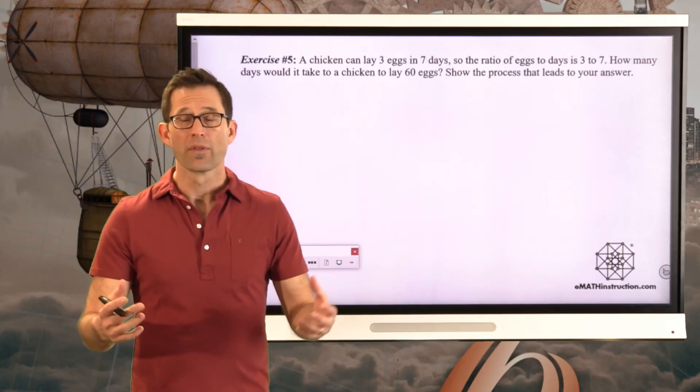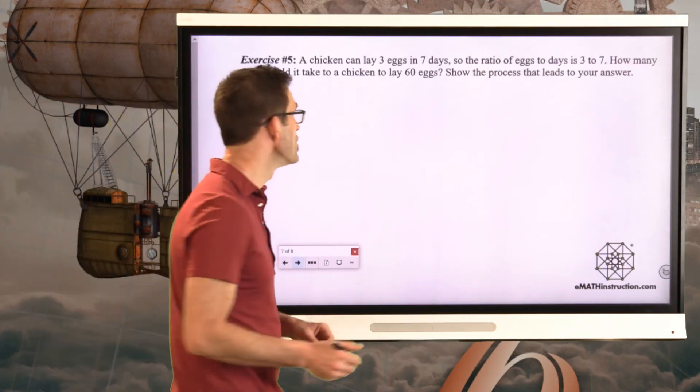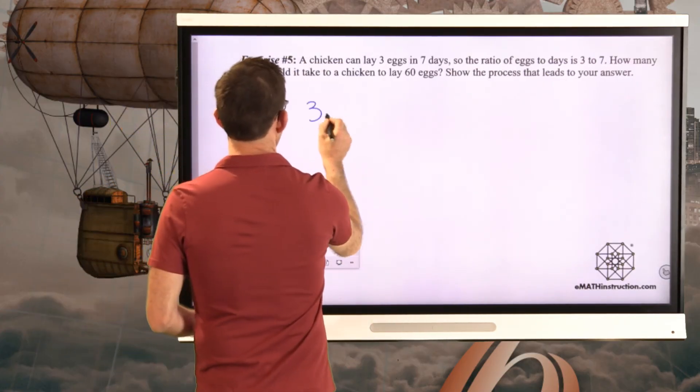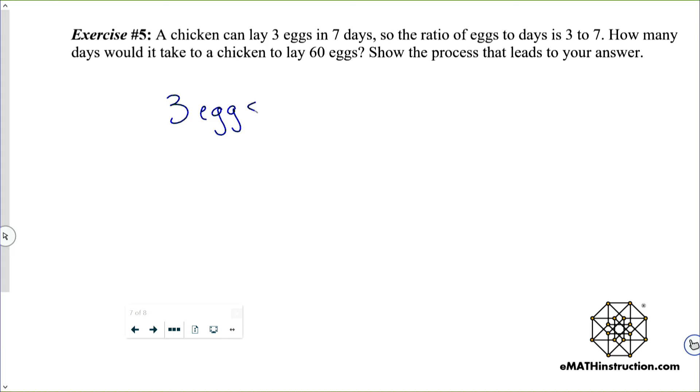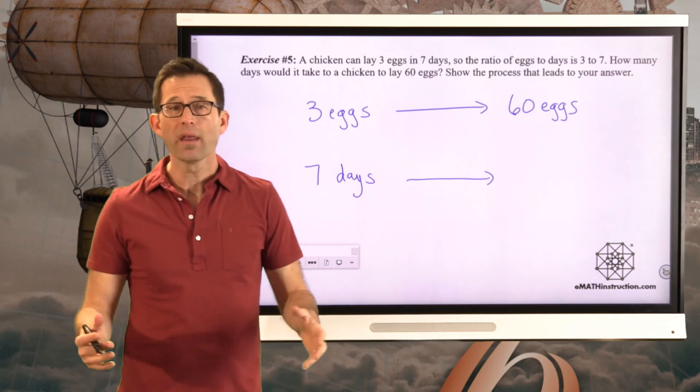Well, here we go. You could lay it out with a fraction. You could lay it out with a table. You could lay it out with a double number line. Or you could just do the following. I've got three eggs and I've got seven days. I want to make that into 60 eggs and a certain number of days. Well, what would I have to multiply three by in order to get 60? For many of you, you can just look at this problem and say, oh, I would have to multiply by 20.